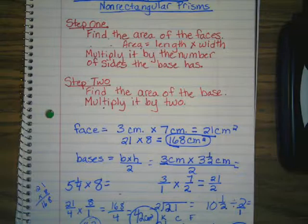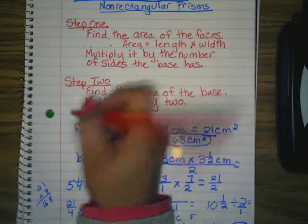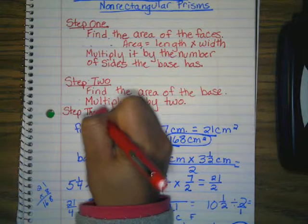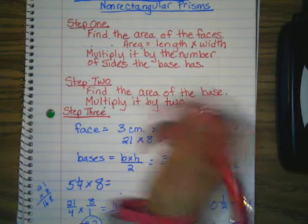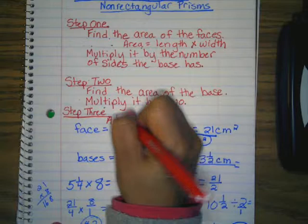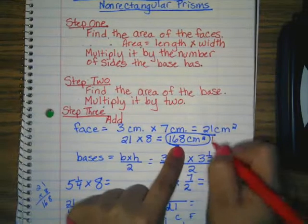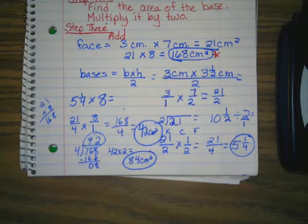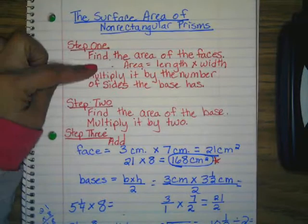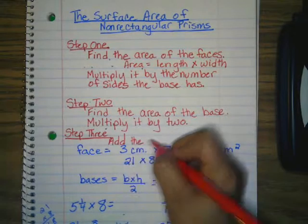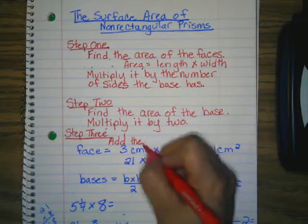We also know the sum of the faces is 168 centimeters squared. What's our last step? And we need to write this down. Maybe? We have to add 168 centimeters plus 84 centimeters. Good. So you need to add the area of the faces to the area of the bases. So I'm adding in step 3.